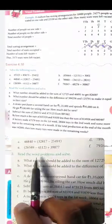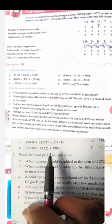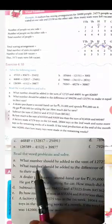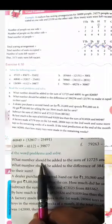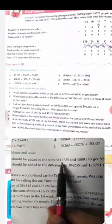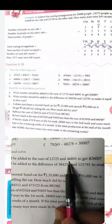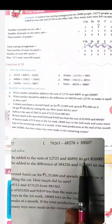Question number two, read the word problems and solve. Question number A, what the number should be added the sum of 12725 and 46891 to get 82600?